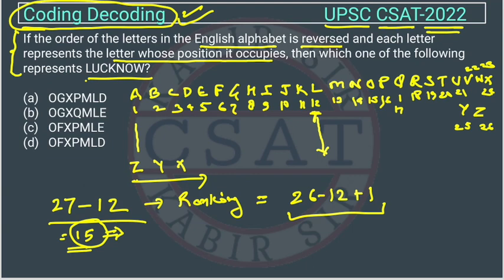27 minus 12 will be equal to 15. The letter which is at position 15 will come at position 12 when we reverse it. So what is the letter at position 15? Position 15 is occupied by O. So when we reverse it, O will come here. Either you can write it down, whatever way you feel easy, you do it.